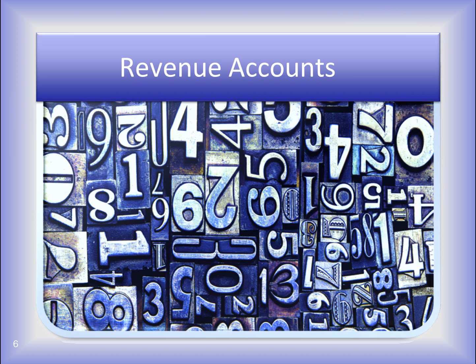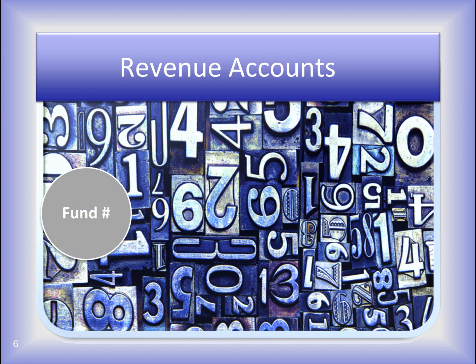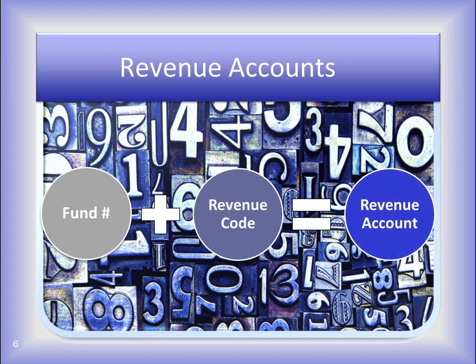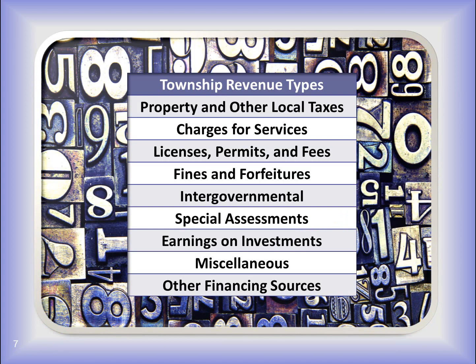Revenue accounts classify revenue by the source type, which is meaningful on the annual financial report. The fund number plus a three-digit revenue code is your revenue account. All revenue codes belong to a revenue type. On the screen you see the revenue types that belong to the Township Chart of Accounts. Within each of these categories are revenue codes. It is important to understand the differences in the revenue types and to select a revenue code from the correct type.